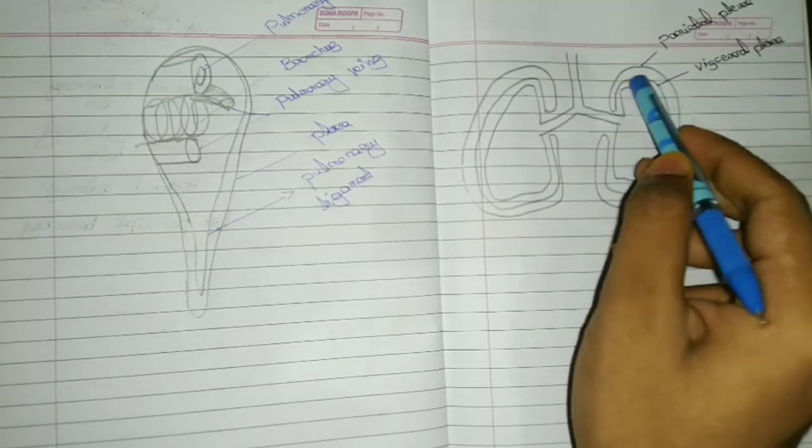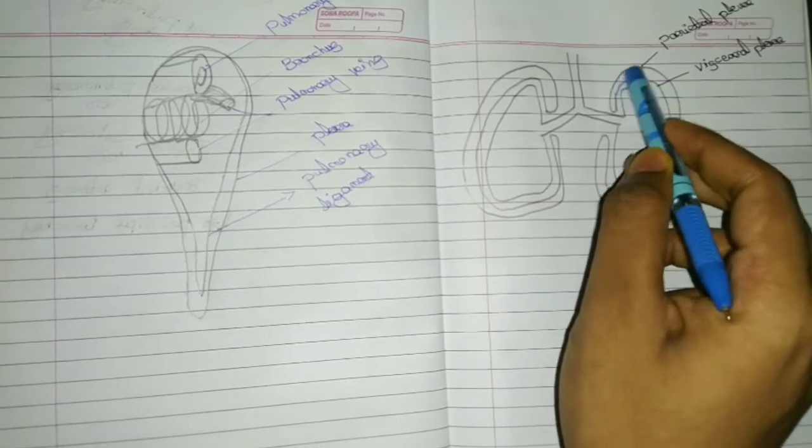outer peritoneum, and this is the cavity that is known as pleural cavity.